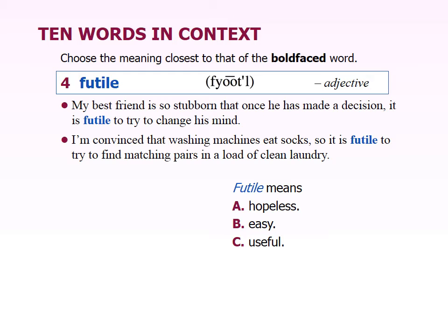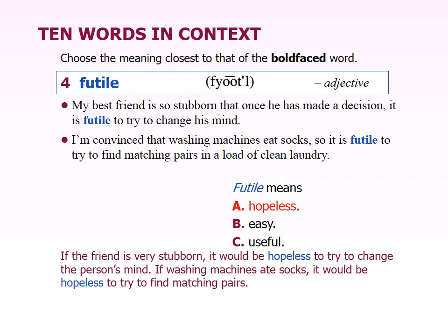The next word is futile. 'My best friend is so stubborn that once he has made a decision, it is futile to try to change his mind.' 'I'm convinced that washing machines eat socks, so it's futile to try to find matching pairs in a load of clean laundry.' And what futile means is hopeless. On page 51, futile says useless, unable to succeed. So futile has the meaning of something you can try to do, but you're not going to be successful — you want to do something, but it's impossible. There's no point in doing it.